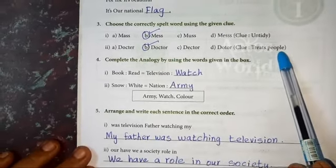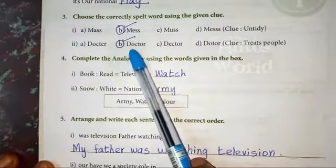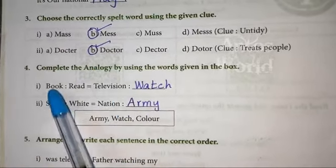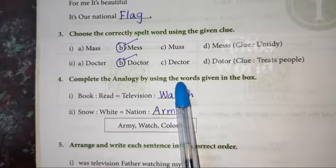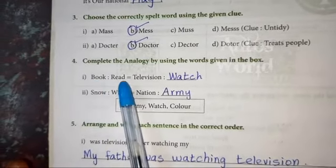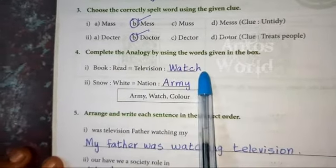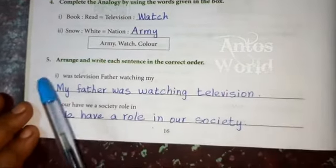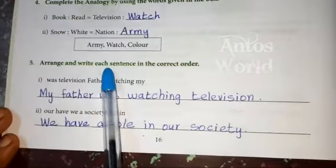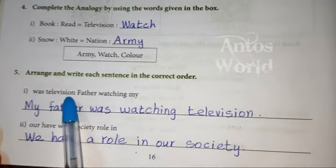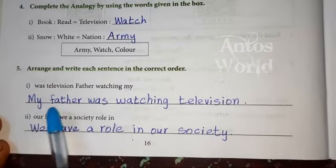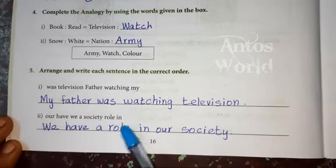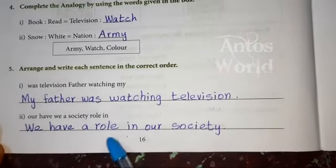Treats people — that is doctor. Doctor spelling: D-O-C-T-O-R. Fourth one: complete the analogy by using the words given in the box — book, read, watch, snow white, nation, army. Arrange and write each sentence in the correct order. My father was watching television. We have a role in our society.